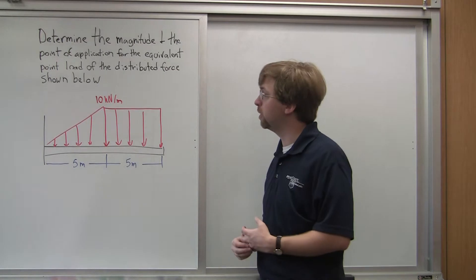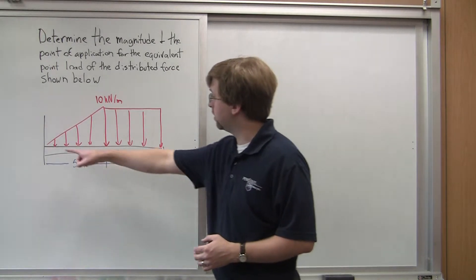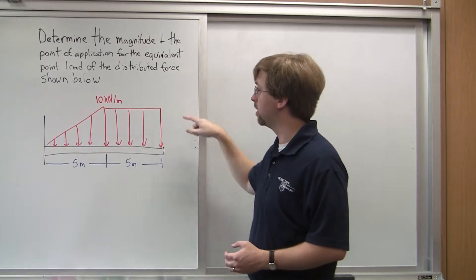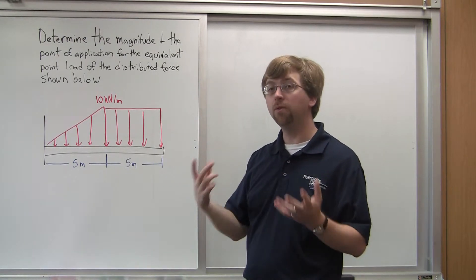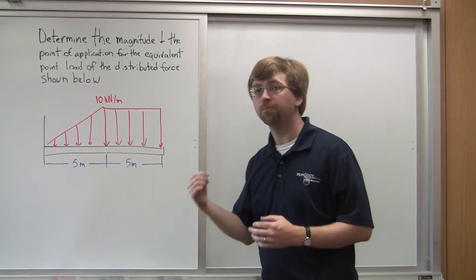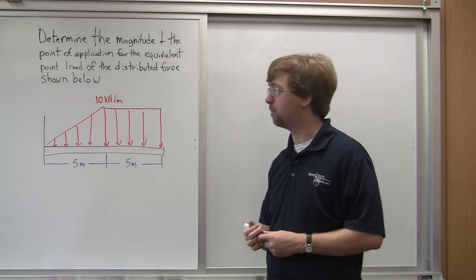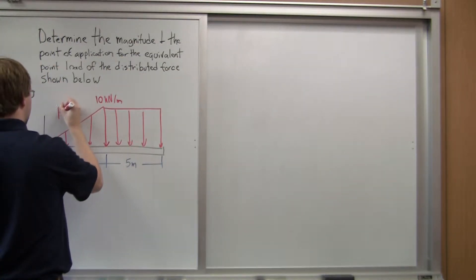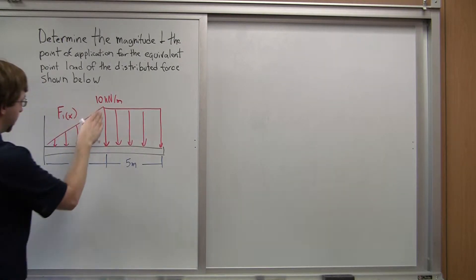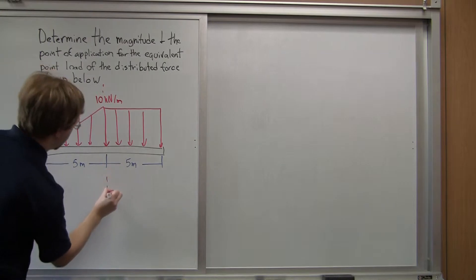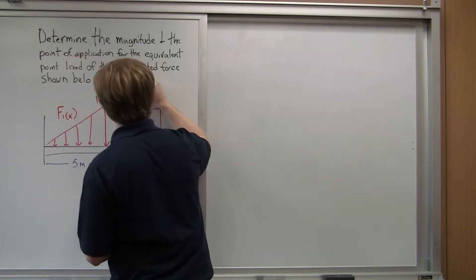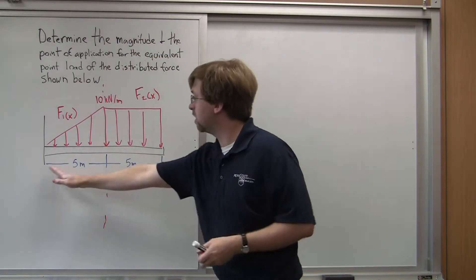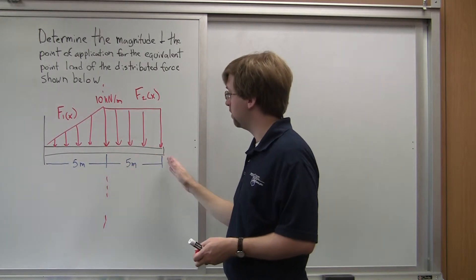In this particular force, we've got what's called a discontinuous function. It's a straight line going from zero out to five, and then it's a different straight line — a horizontal line going beyond that. So we're actually going to need two force functions in order to solve this problem. I'm going to break it down: f1(x) is this section from zero to five, and f2(x) is this force function from five out to ten.